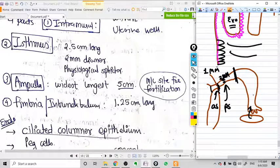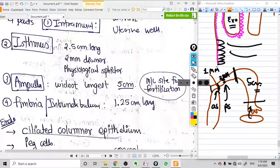Now the ampulla part is the biggest part, 5 centimeters, and it's also the wider part. That's why it is the most common site for fertilization, because it is wider.